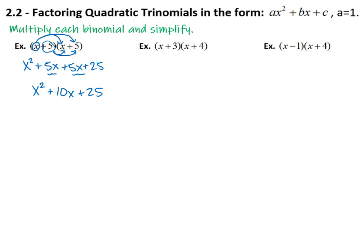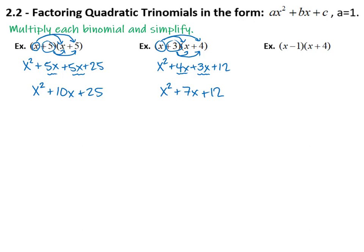Let's try our next one. Distributing our x again gives us x squared. x times 4 gives us positive 4x. Come back and distribute this positive 3: 3 times x makes 3x, and 3 times 4 gives us positive 12. In the middle we have a couple of terms with x to the first power we can combine. 4x's and 3x's makes 7x plus 12, so x squared plus 7x plus 12.